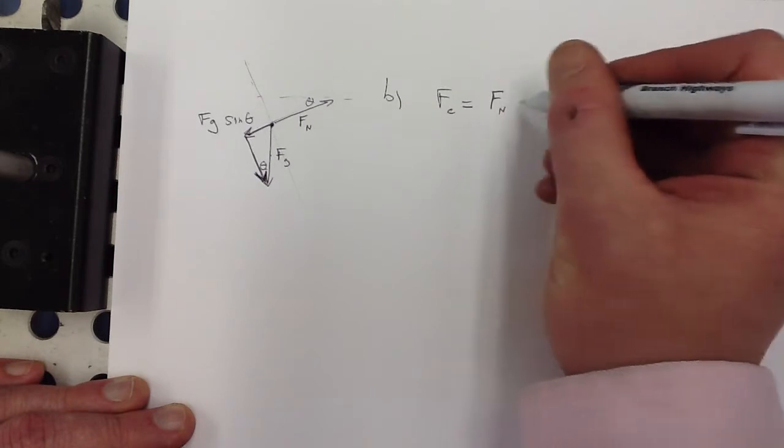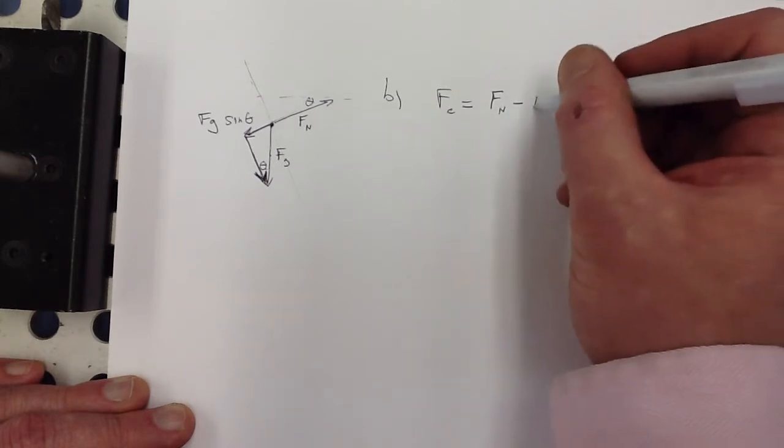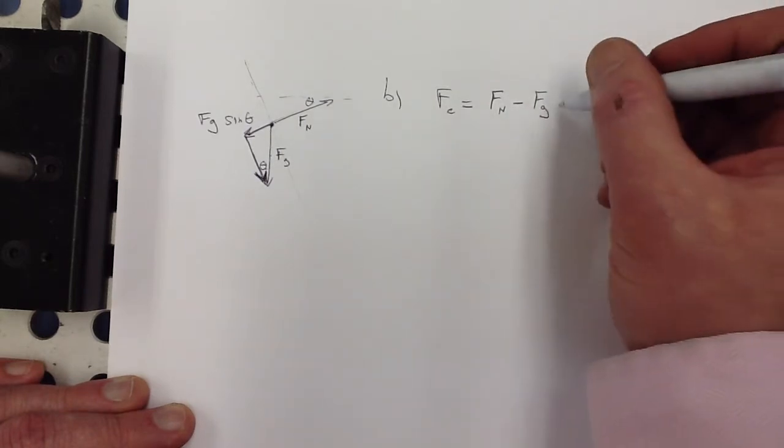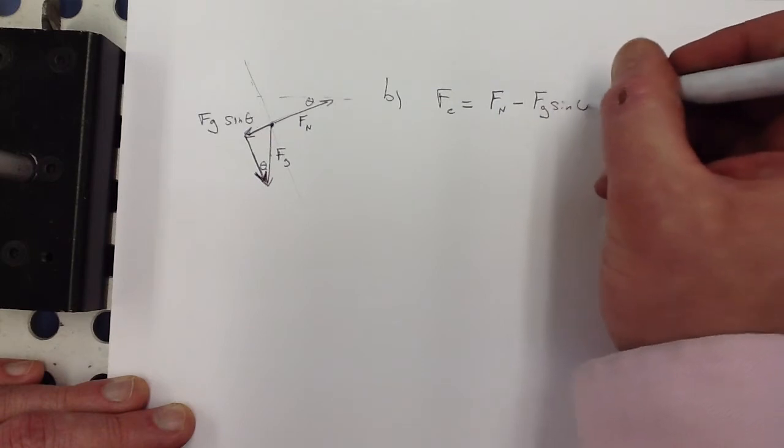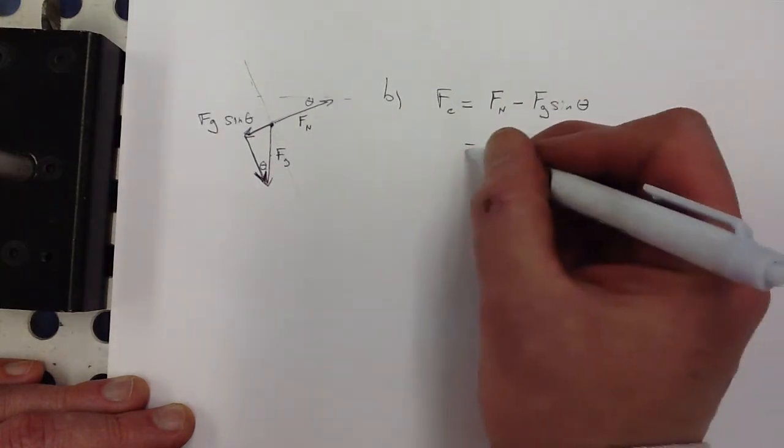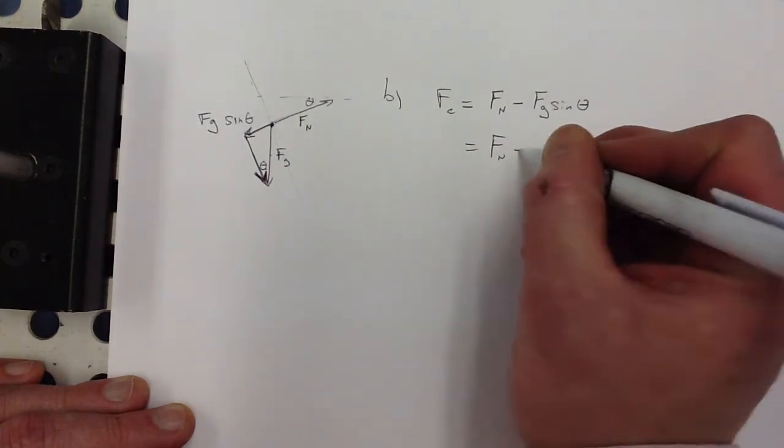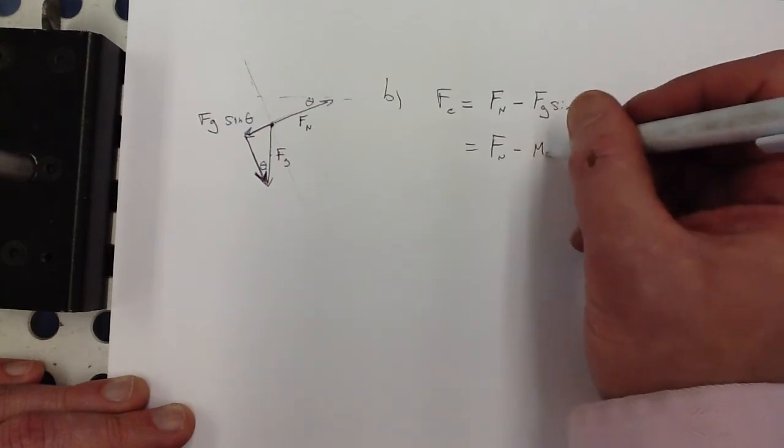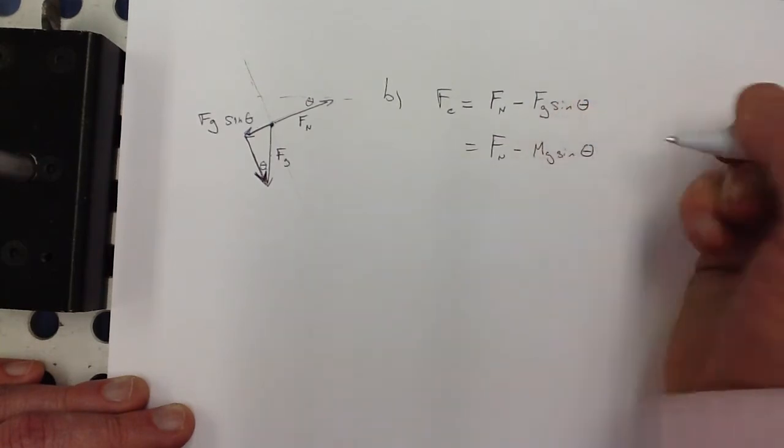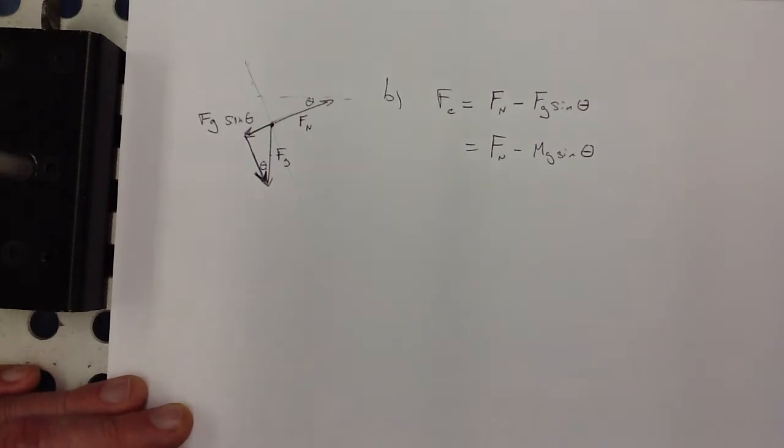So it would be normal force minus gravitational force times the sine of theta. And I think it would be fine to have normal force minus Mg sine theta. Right?